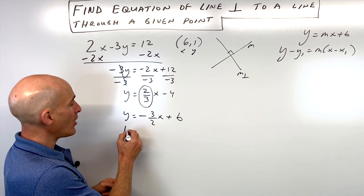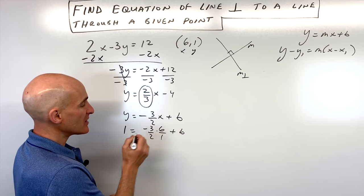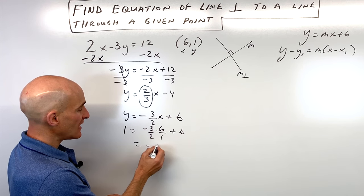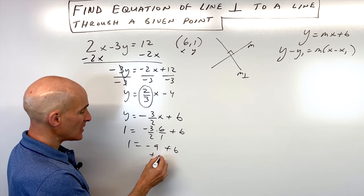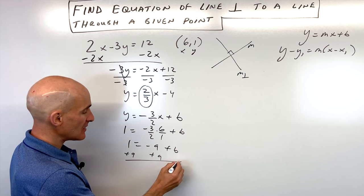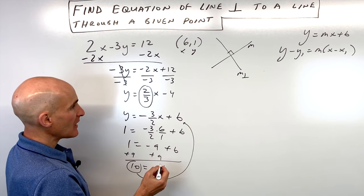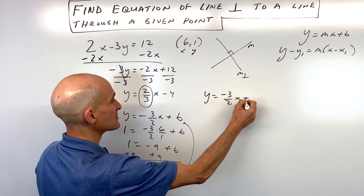So we have 1 equals negative 3 halves times 6 plus b. This gives us negative 18 over 2, which is negative 9, plus b. If we add 9 to both sides of the equation, b equals positive 10. Now we put that back in, and we've got our equation: y equals negative 3 halves x plus 10.